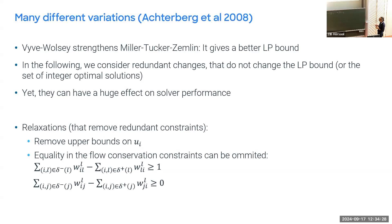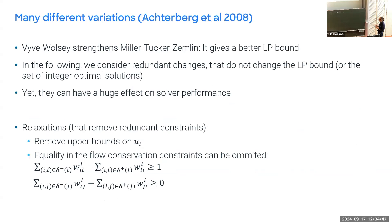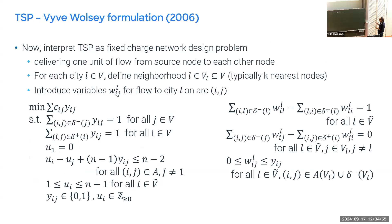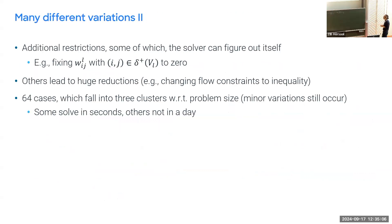Some additional strengthenings a solver can figure out, and some it cannot — these can lead to reductions in the preprocessing phase, which will be explained tomorrow. All in all, 64 models were compared — all theoretically equivalent. Some solve in seconds; others do not solve even in a day, and that's not necessarily related to problem size.